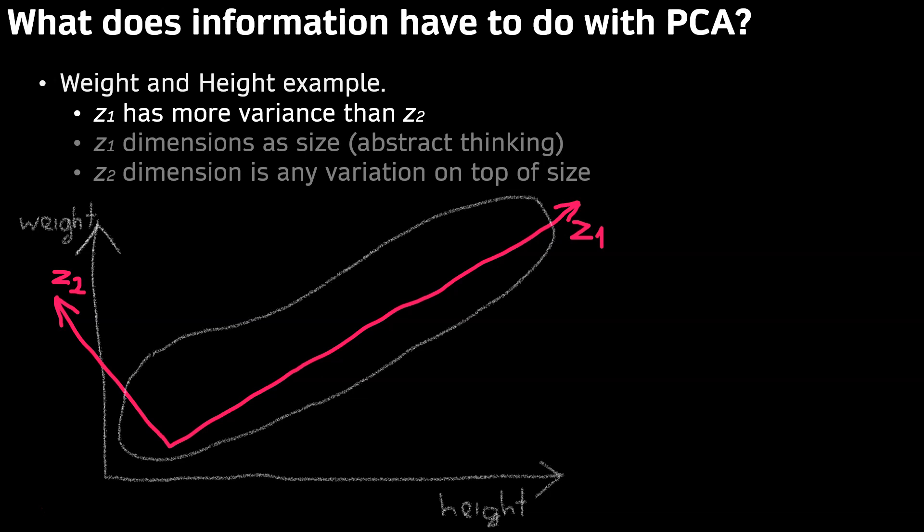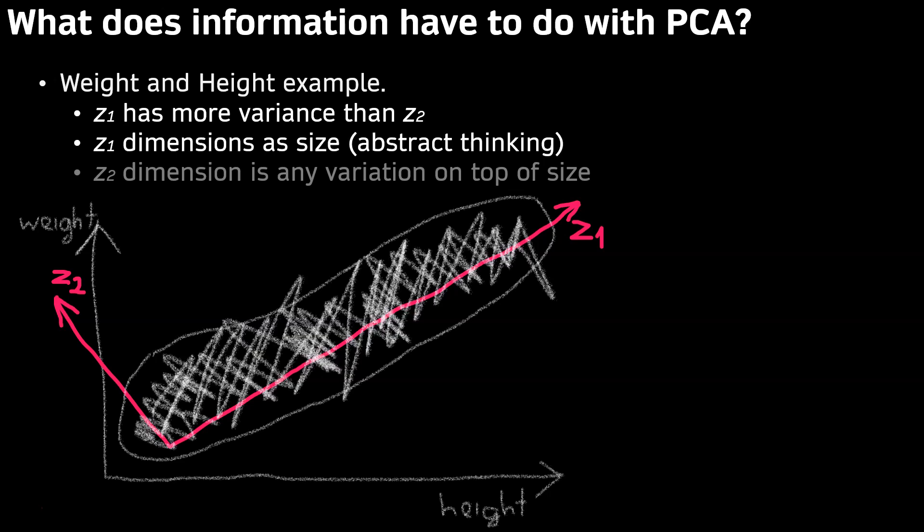We can abstractly think that Z1 dimension as size, and Z2 dimension is any variation on top of size. For example, a tall person can be very skinny, or a stout person is short and heavier.